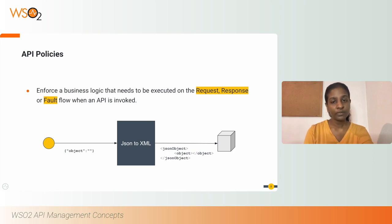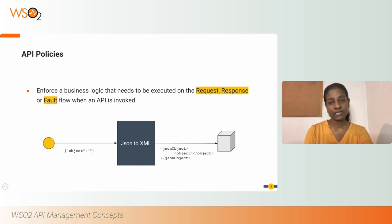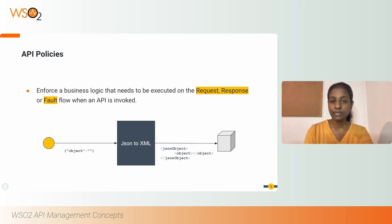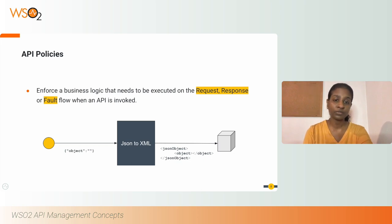For example, assume that you need to transform your request payload from JSON to XML before sending it to your backend because your backend API accepts XML payloads only. You can simply attach a policy in the request flow, so every time your API is invoked through WSO2 API Manager, the request payload will get converted to XML.